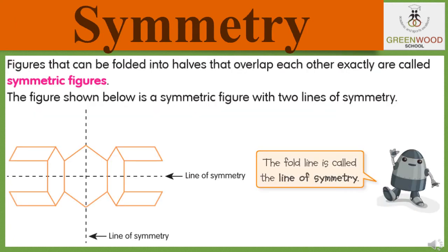Next topic is symmetry. Figures that can be folded into halves that overlap each other exactly are called symmetric figures. The figure shown below is a symmetric figure with two lines of symmetry: one is horizontal and one is vertical. And all the 4 parts, as you can see in the figure, will be exact same, a copy of each other. And the fold line is called the line of symmetry.